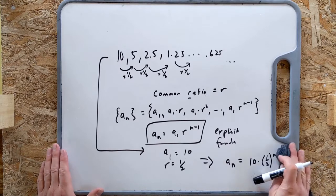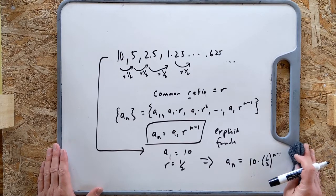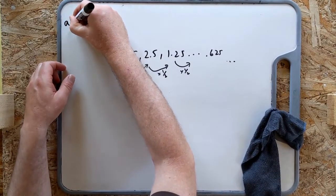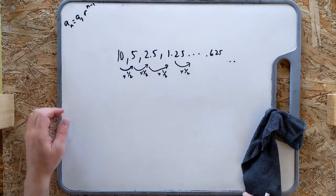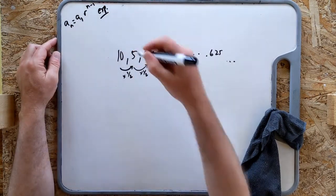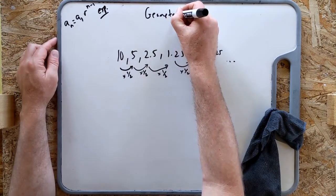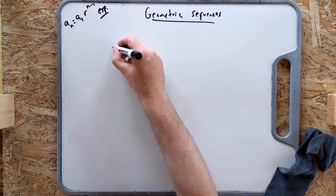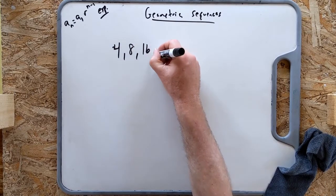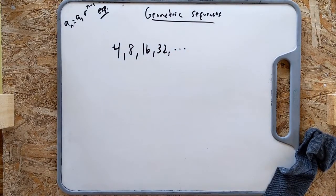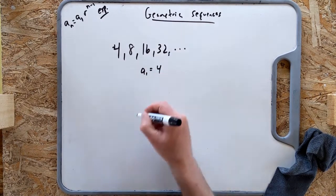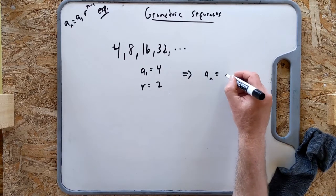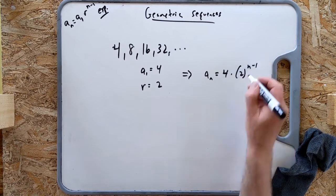For the other example, 4, 8, 16, 32: a_1 is 4 and r is 2. Therefore the explicit formula is a_n equals 4 times 2 to the n minus 1. If I had a slightly different series like -8, 16, -32, I'm multiplying by negative 2. Still the same number every time, so it's still a geometric sequence. The formula becomes a_n equals 4 times (-2) to the n minus 1. Make sure you put parentheses around the negative 2.